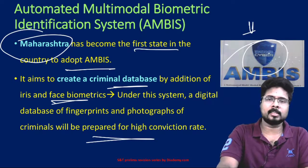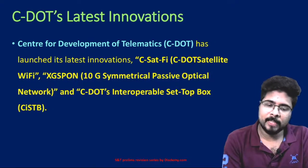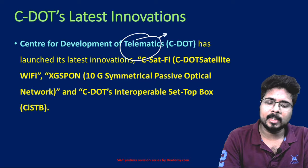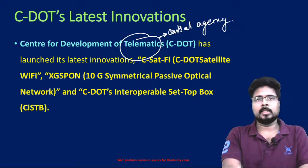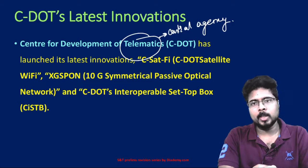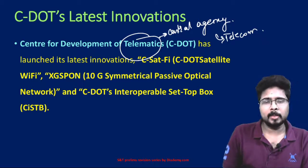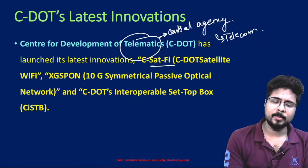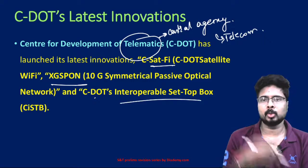C-DOT — the Centre for Development of Telematics — is a central government agency working on the latest innovations in the field of telecommunications. C-DOT has launched several innovations: CSAT file, XGS-PON, and C-DOT's Interoperable Set-Top Box.